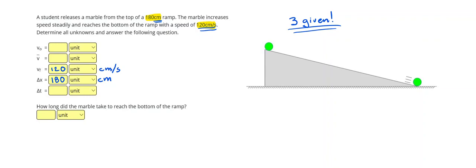But we said there have to be three given in the problem. So, what's the third one? Well, at the top of the ramp, we see that there are no motion lines. Also, the word releases tells us that initial velocity is going to be zero. Units will still be centimeters per second.